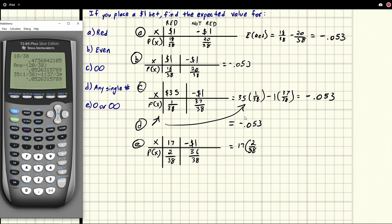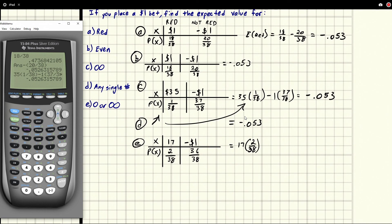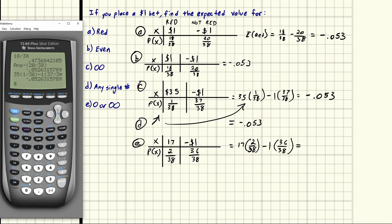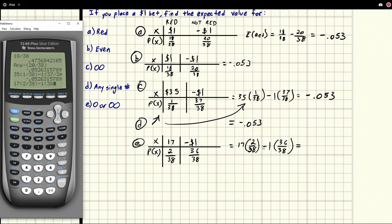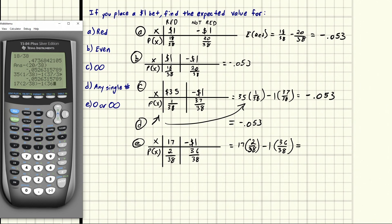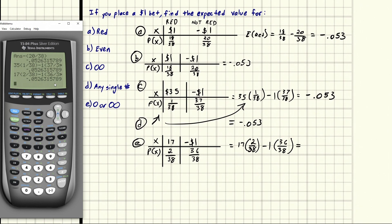So this is going to be equal to 17 times 2/38. That is a 3 - I know it doesn't look like a three. And then we're going to do minus a dollar times 36/38. Let's see what this expected value is. So we're going to do 17 times 2 divided by 38 minus 1 times 36 - we could really just type minus and then do the division - 36 divided by 38. Let's see what we get. Oh, we get the same thing. Negative approximately 0.053.